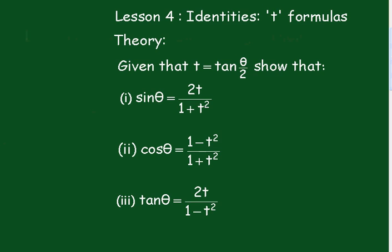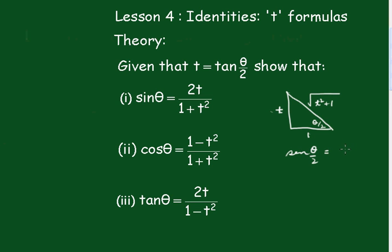These are very important formulae and we'll derive them now. First of all, we'll set up a little triangle. We know that t equals tan(θ/2), so we label this angle θ/2, making the opposite side t and the adjacent side 1. Using Pythagoras, the hypotenuse is the square root of (t squared plus 1). Therefore, sin(θ/2) equals t over √(t²+1) and cos(θ/2) equals 1 over √(t²+1).